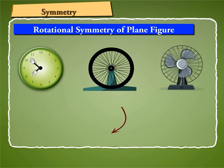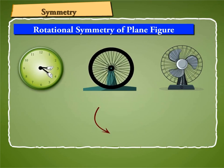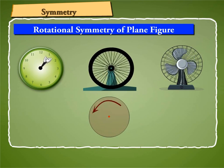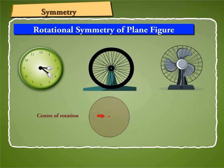As you know, rotation takes place about a point and this point may or may not be the center of the object. The point about which an object rotates is called center of rotation.